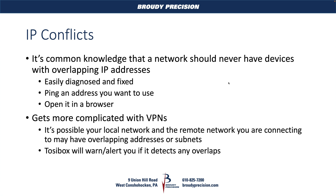Where this gets really complicated and less intuitive is when you start using VPNs, because there's the possibility for your local network and the remote network you're connecting to to have overlapping addresses or subnets. This is unintuitive because when you're setting up that remote device or network — in our case it's typically a job site — you're not thinking about the IP addresses of the devices that are going to be connecting to that network potentially in the future.